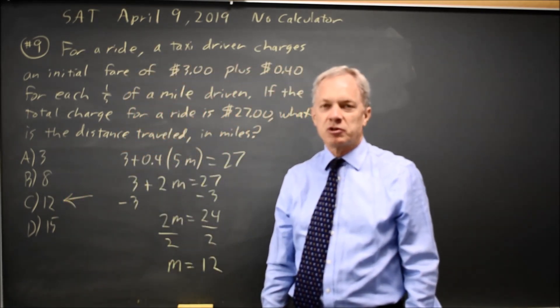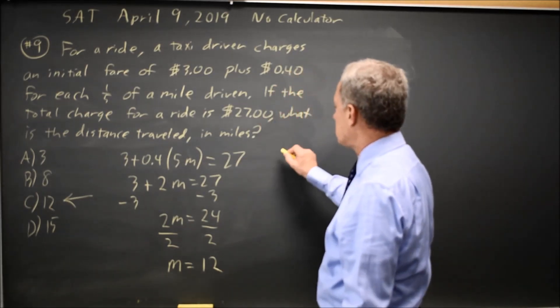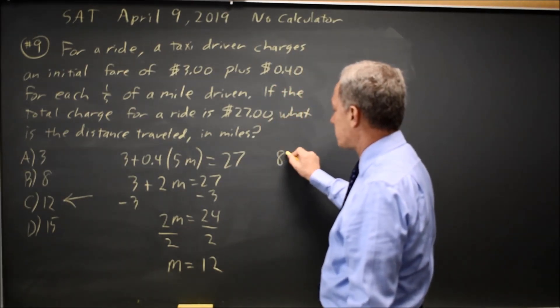Alternatively, you could figure the number of fifths of a mile for each answer choice. So, for example, choice B would be 8 fifths of a mile.